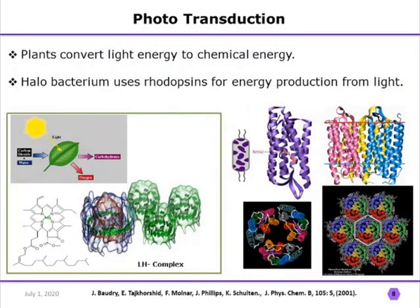One type of signal transduction is phototransduction. We get food from plants, which produce it through photosynthesis. In photosynthesis, chlorophyll present in green leaves takes up light energy and converts it into chemical energy — this conversion is an example of phototransduction. Similarly, halobacterium uses the rhodopsin protein in its purple membrane patch to absorb light and convert light energy into chemical energy for its survival.